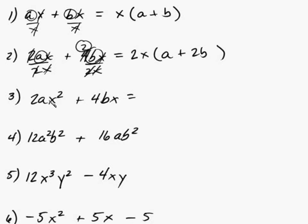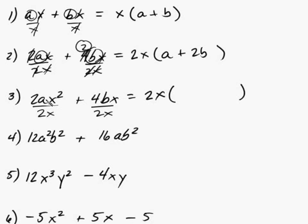Here we've got a 2 and a 4, so we can take out a 2. We have x squared and x — since you have a factor of x in both terms, you want to factor out the lowest degree, which is x. So we factor out 2x. Set up your parentheses and divide both terms by 2x. The 2 cancels, leaving a. The x cancels once, leaving x. The 4 divided by 2 gives 2, and you're left with ax plus 2b.